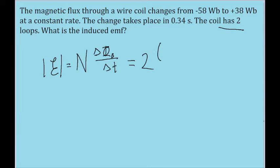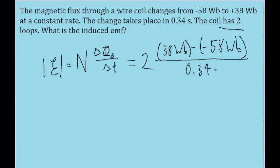Times then the rate of change of the flux is also given to us. It starts at negative 58 Webbers and then goes to positive 38 Webbers. So that's 38 Webbers minus negative 58 Webbers, and all this is divided by a change in time of 0.34 seconds.